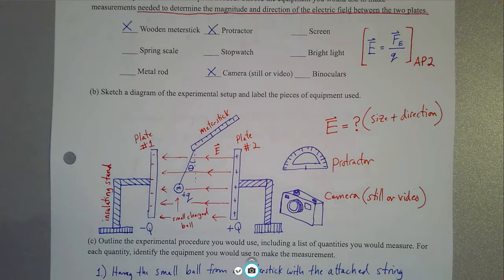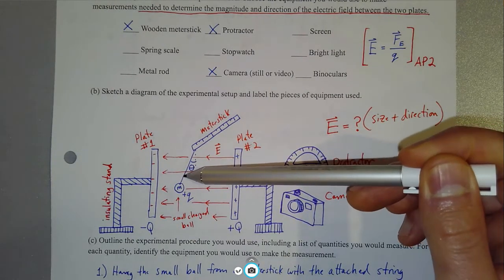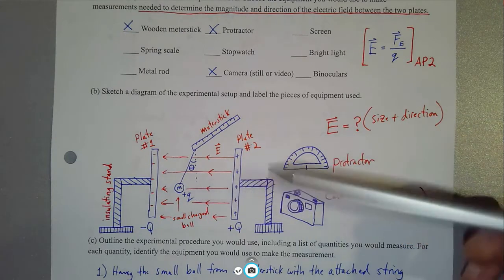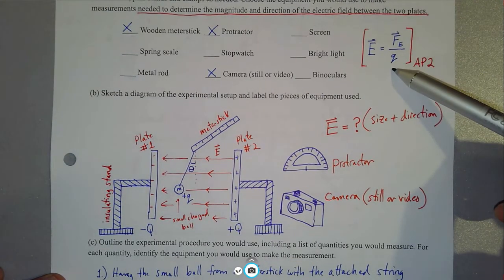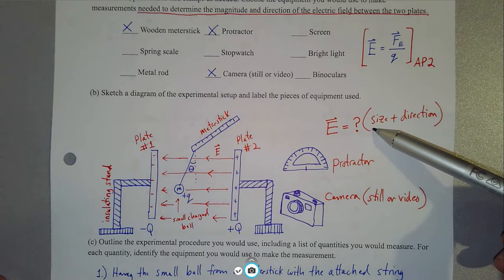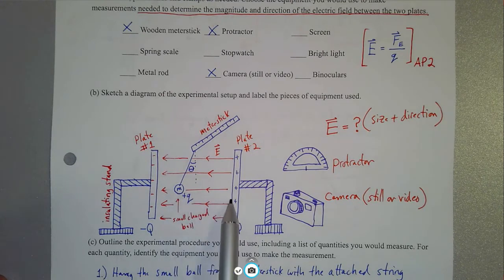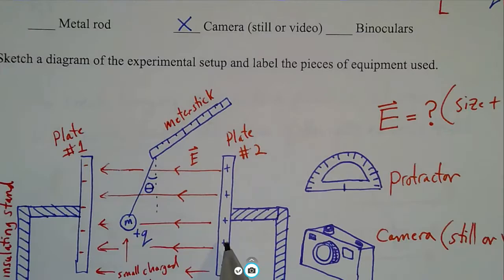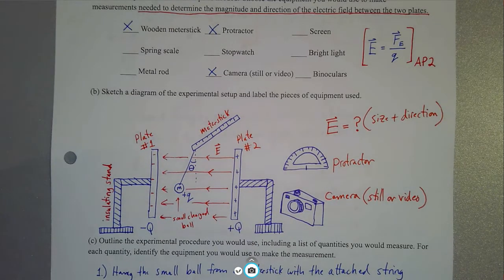If we can measure how many degrees it swings from vertical, and we know the mass of this object and some other things, we should be able to calculate the size of the electric force. Dividing by q gives us the size of the electric field. The direction of the electric field is simply whichever direction the positively charged mass swings — whatever plate it swings away from would be the positive plate.